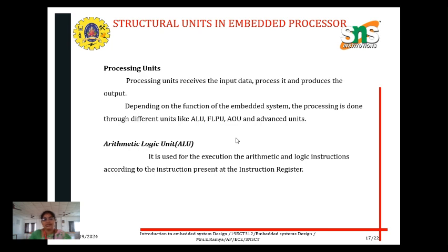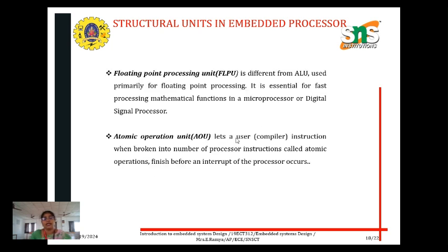The processing unit receives the input data, processes it, and produces the output. The ALU (Arithmetic Logic Unit) is mainly used for arithmetic and logic instructions. The floating point processing unit (FLPU) is derived from the ALU and is used primarily for floating point processing — it is essential for post-processing mathematical functions in a microprocessor or digital signal processor. The atomic operation unit (AOU) uses instructions where a task broken into a number of processor instructions is called an atomic operation.